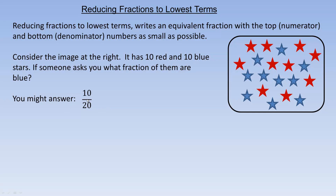When you're reducing fractions, you divide the same number into the top and the bottom. Since 10 and 20 are both even numbers, they divide evenly by 2. So 10 divided by 2 is 5, and 20 divided by 2 is 10. Notice that dividing by the same number is really the same as dividing by 1 — that's why the fractions are actually equivalent. They still represent the same part of something.